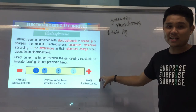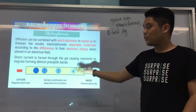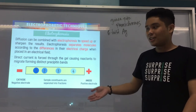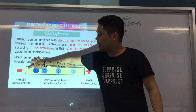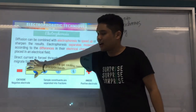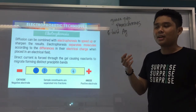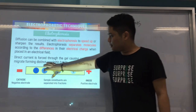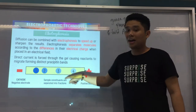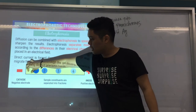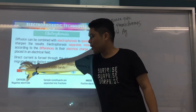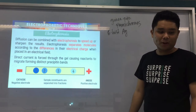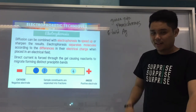The movement in the electrophoresis pattern is from cathode to anode — from negative to positive. In electrophoresis, most of your proteins assume a negative charge and are attracted to the positive charge. When electricity is applied, the fractions of your sample move from cathode to anode and are separated into different fractions. That's the introduction to electrophoresis.